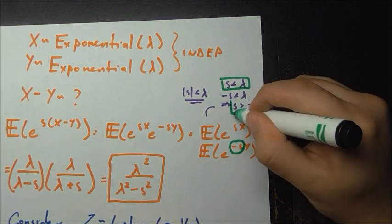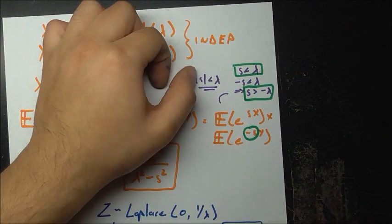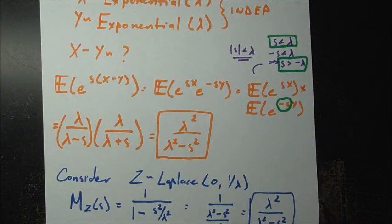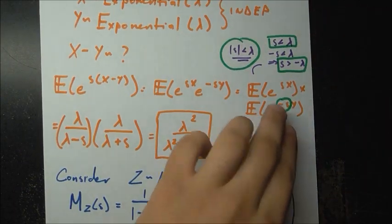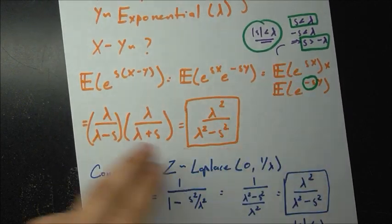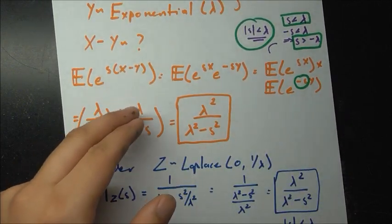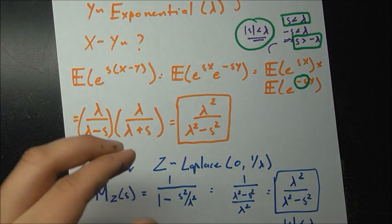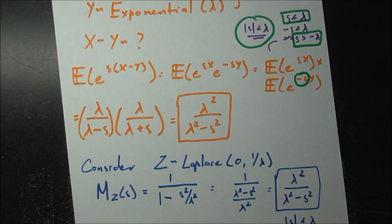Taking them together compactly, the absolute value of s must be less than lambda. Under this condition, the MGF of x minus y is lambda over lambda minus s times lambda over lambda plus s, which simplifies to lambda squared over lambda squared minus s squared.